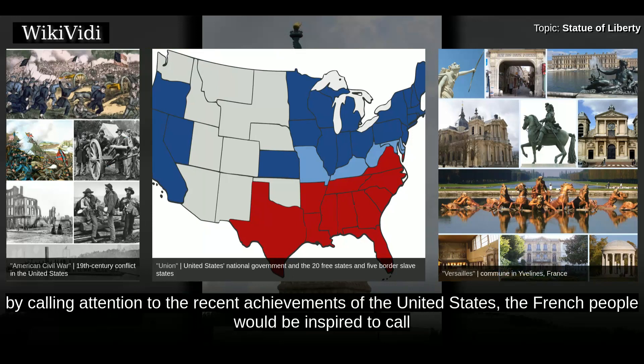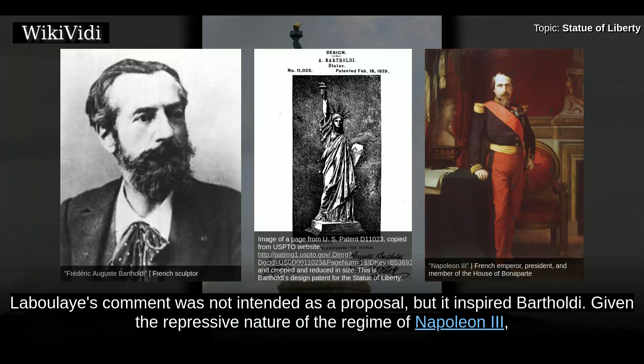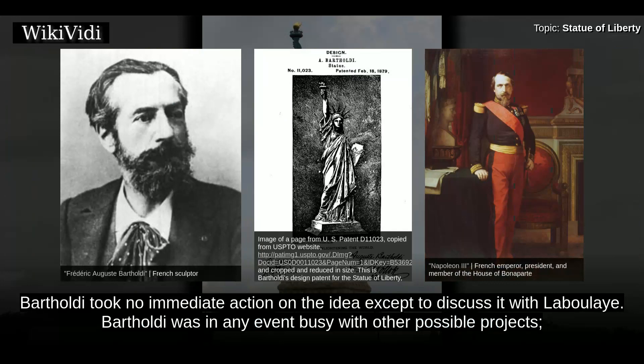Laboulaye hoped that by calling attention to the recent achievements of the United States, the French people would be inspired to call for their own democracy in the face of a repressive monarchy. According to sculptor Frédéric Auguste Bartholdi, who later recounted the story, Laboulaye's comment was not intended as a proposal, but it inspired Bartholdi. Given the repressive nature of the regime of Napoleon III, Bartholdi took no immediate action on the idea except to discuss it with Laboulaye.